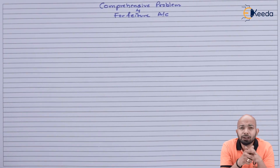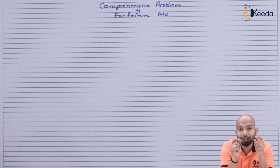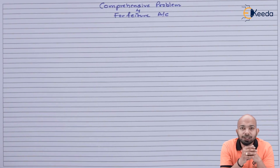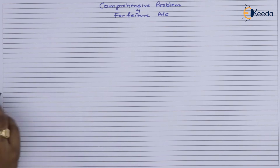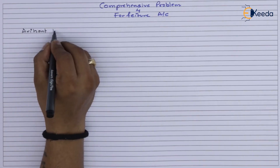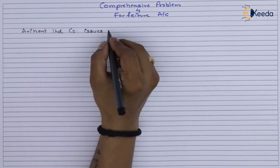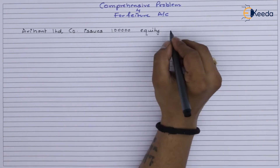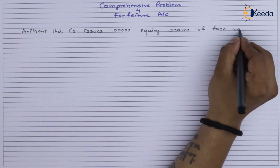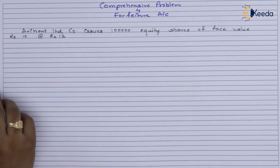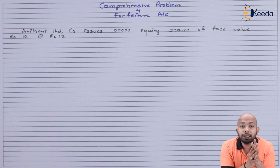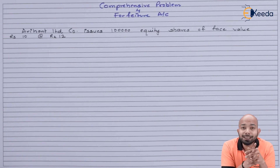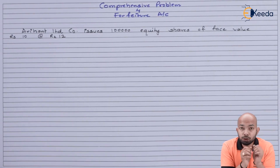Let's start with jotting down the illustration for your reference. The question states that Arihant Limited company issued 1 lakh equity shares of face value ₹10 at ₹12 — that means each share was sold at a premium of ₹2.